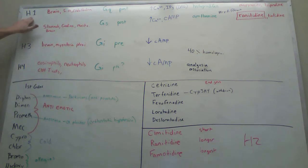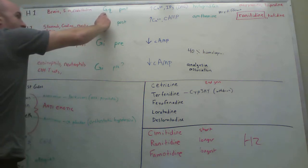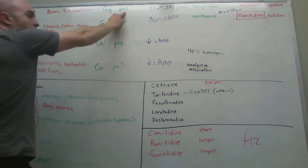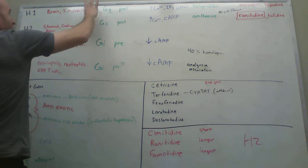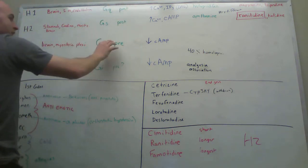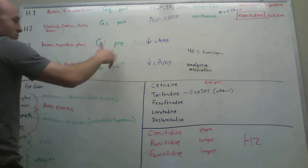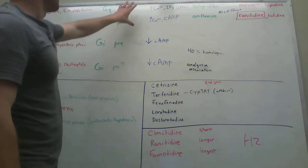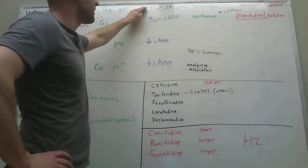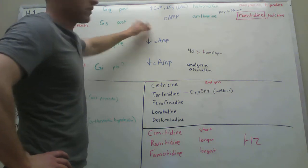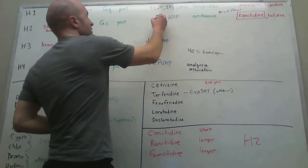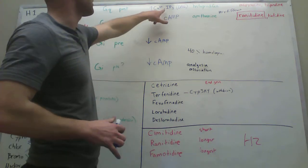First of all, we have the H1 receptors. These are found in the brain, smooth muscle, and endothelium. H2 is found in the brain as well as H3 found in the brain. All these are found in the brain. H1 receptors use the GQ coupled receptors in the post-synaptic membrane. H1 receptors are going to increase IP3. That's how they're going to increase calcium is through IP3.